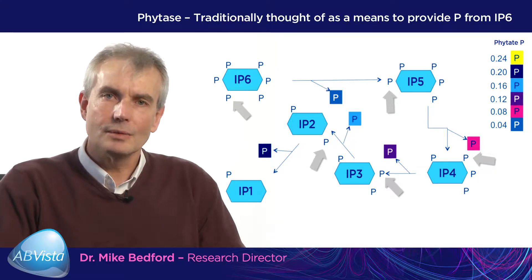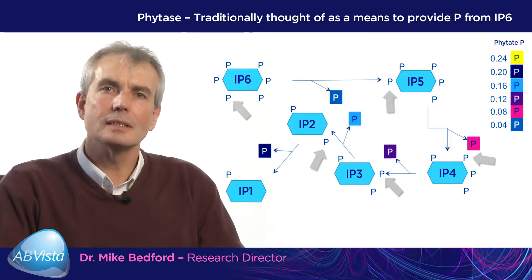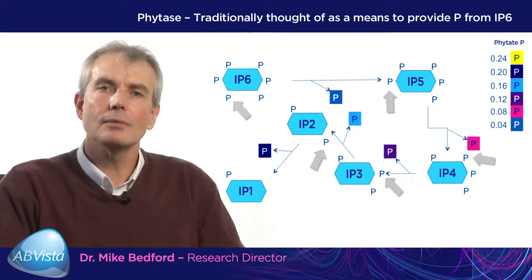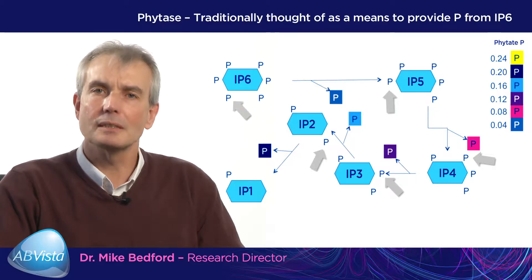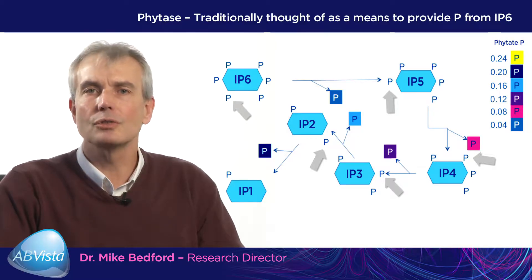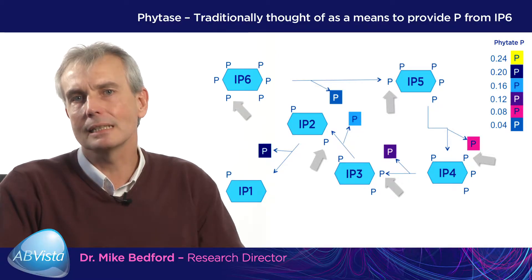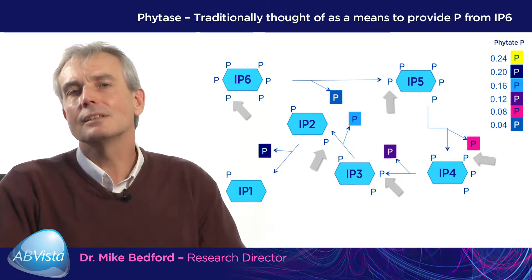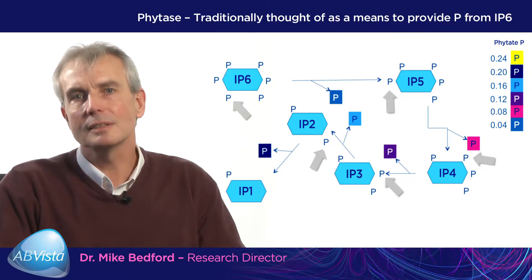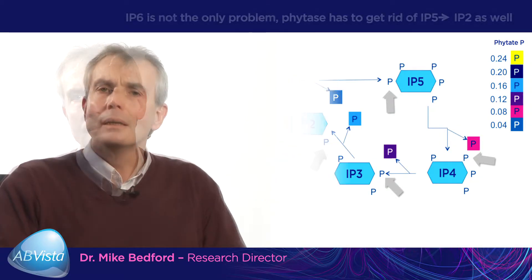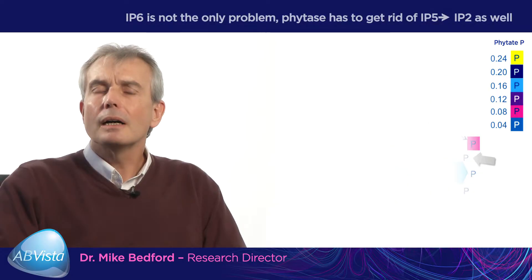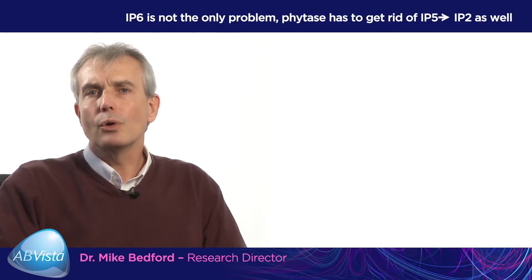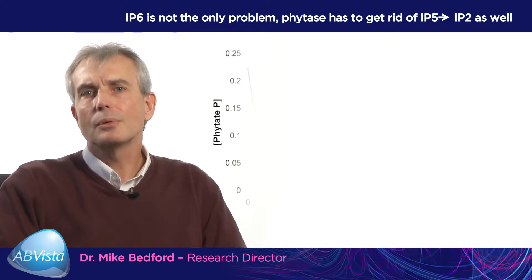What I want to do on the next few visuals is to show you why I think we have got to consider IP5, IP4 and IP3 as being significant anti-nutrients just as much as IP6, and to stop considering phytases as simply a means of delivering phosphorus. What do I mean by IP6, IP5, IP4, IP3 and IP2 being a problem?